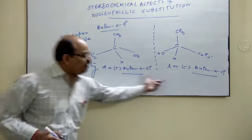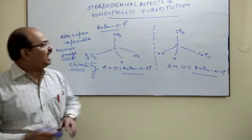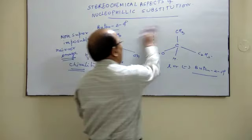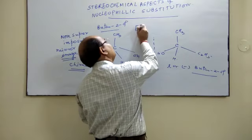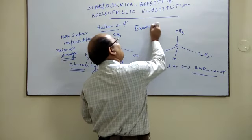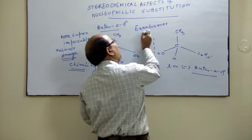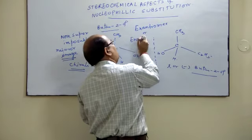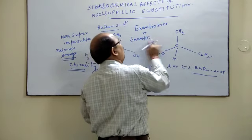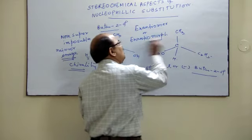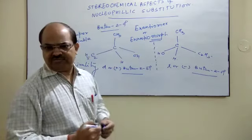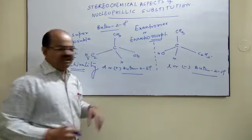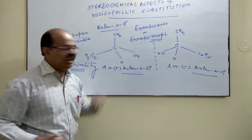So the pair of D and L are known as your enantiomers. They are your enantiomers or they are also known as enantiomorphs. Whether enantiomers or enantiomorphs.